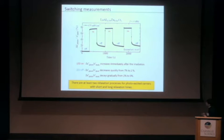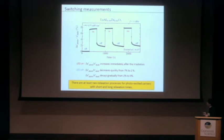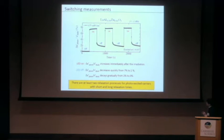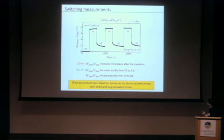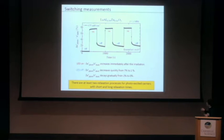This figure shows the result for switching measurement. The dielectric permittivity is measured at 1 MHz under a blinking LED. The vertical axis indicates the relative change of dielectric permittivity from the dark state value. When the LED is turned on, the dielectric permittivity increases immediately up to 7%. When the LED is turned off, it decreases quickly from 7% to 2%, then decays gradually towards the initial value. These results suggest at least two relaxation processes with short and long relaxation times.